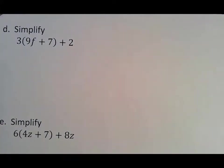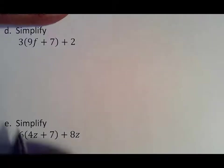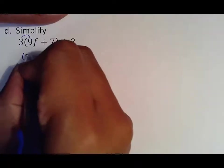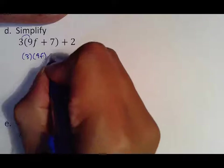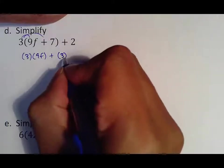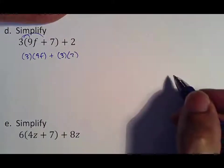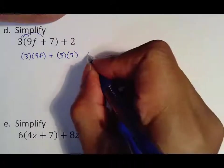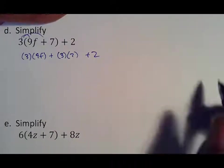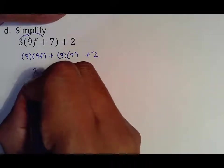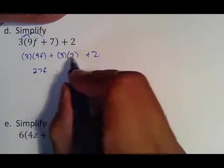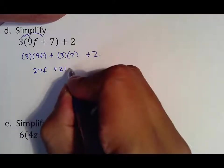The other thing we're going to do with this is combine it with distributive property. Remember that this means that 3 meets 9f, and 3 meets 7, but it doesn't meet 2, so just bring down your plus 2 as is. 3 times 9f would be 27f. 3 times 7, 21. Plus 2.